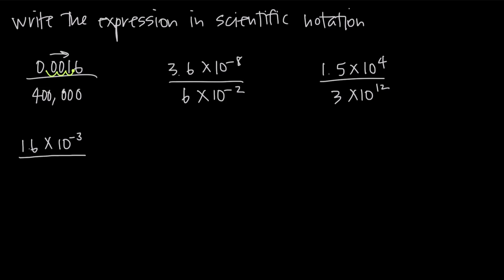Then we divide by 400,000, where the decimal place is at the end. We move it to the left until it's right after the 4, which becomes our whole number — that's 1, 2, 3, 4, 5 spots. Because we moved it 5 spots to the left, we get 4.0 times 10 to the 5. Now that both our numerator and denominator are in scientific notation, we can simplify by handling the whole numbers separately from the powers of 10.